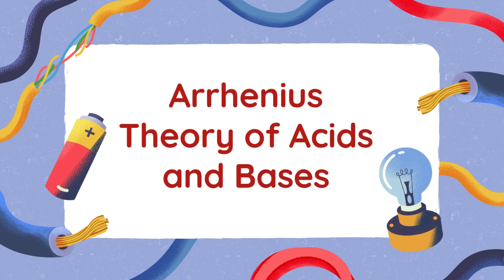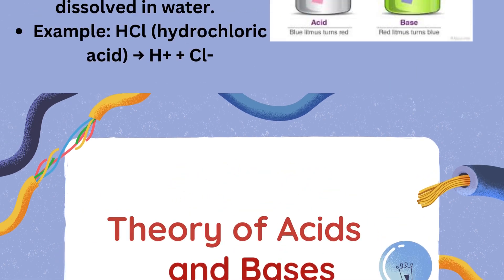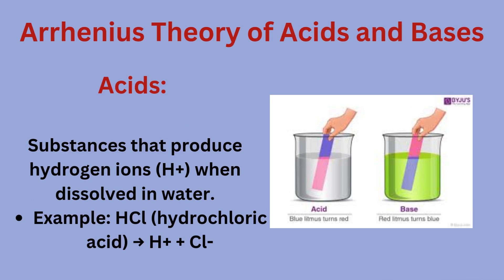Arrhenius Theory of Acids and Bases. Acids are substances that produce hydrogen ions, H+, when dissolved in water. Example: HCl, hydrochloric acid, dissociates into H+ and Cl-.